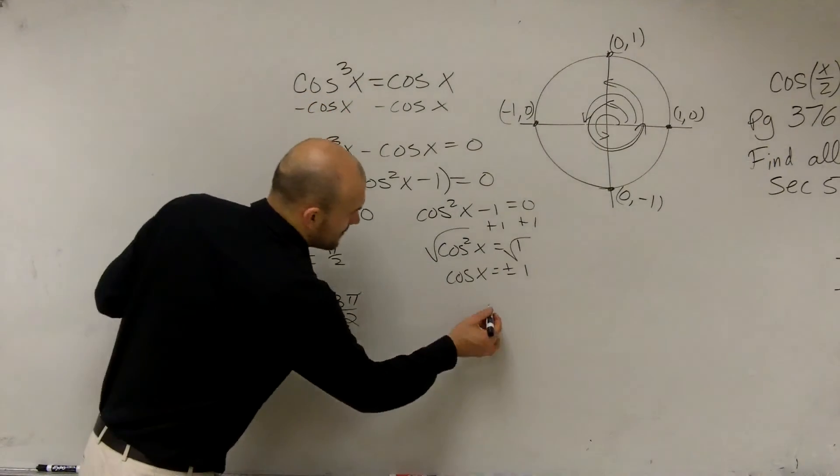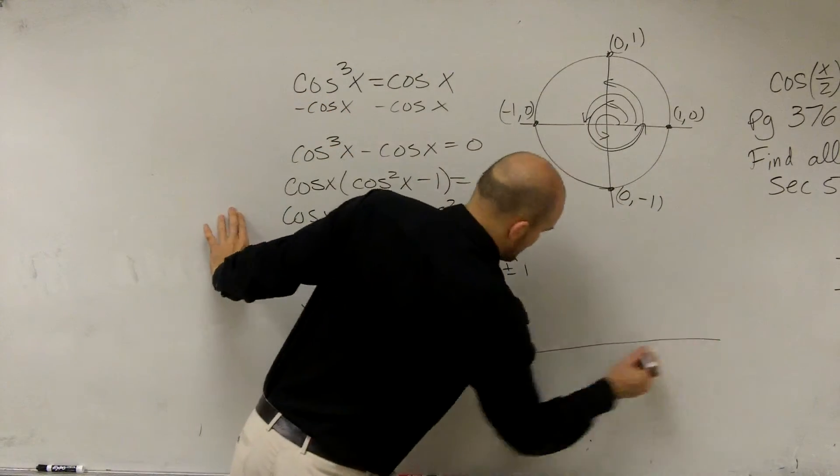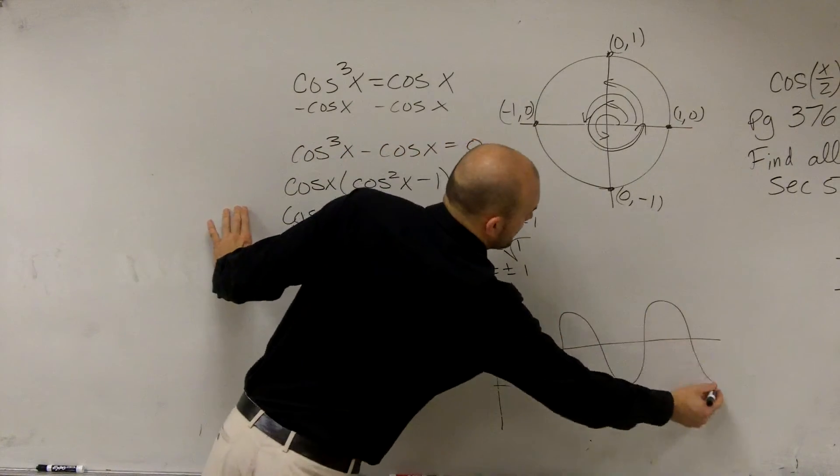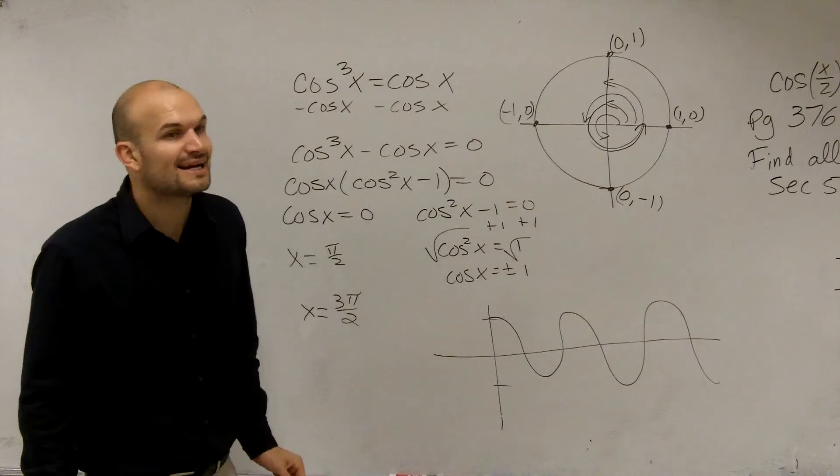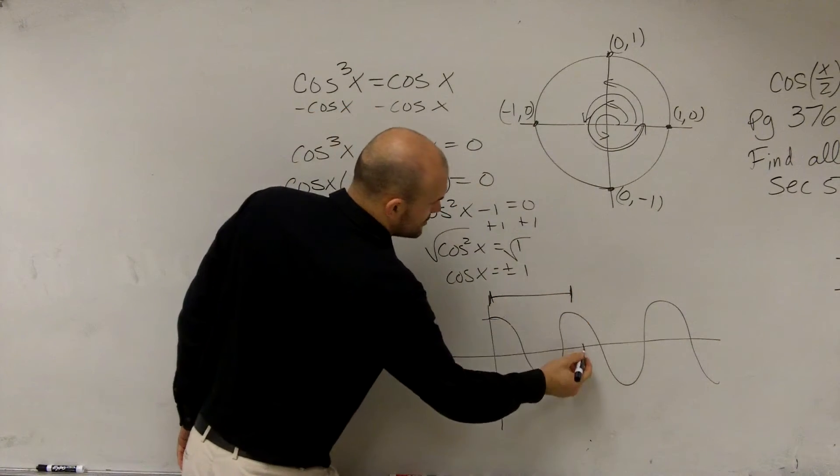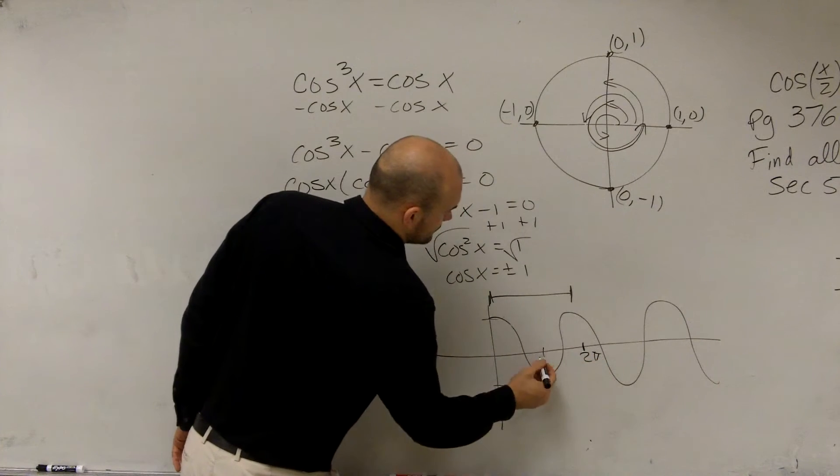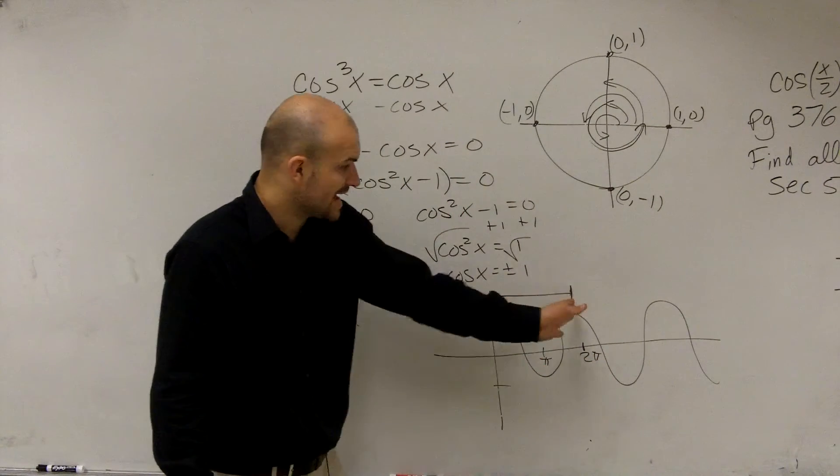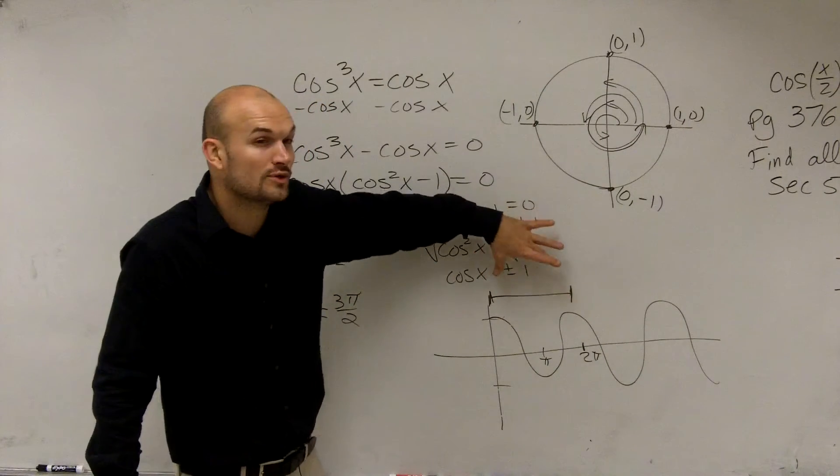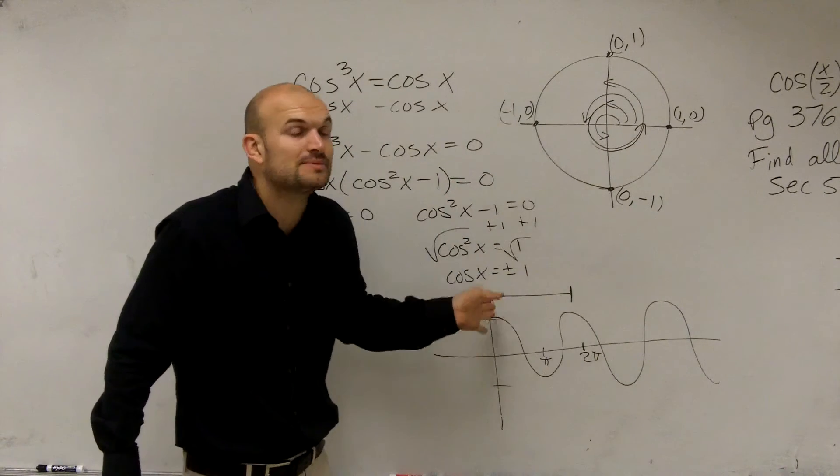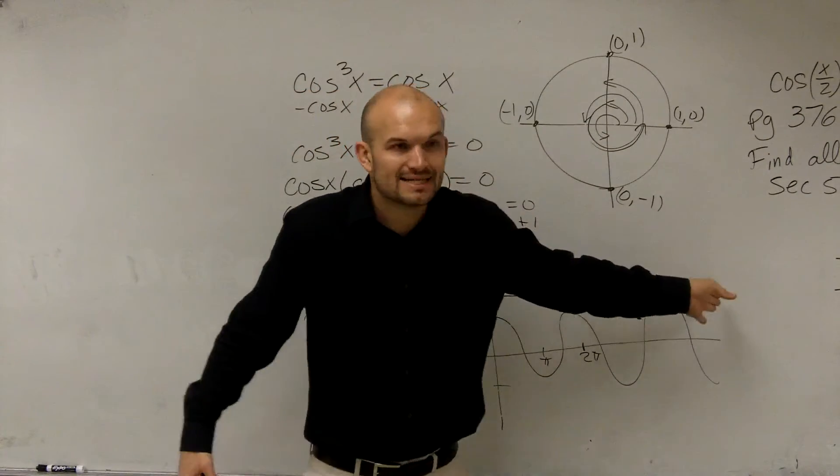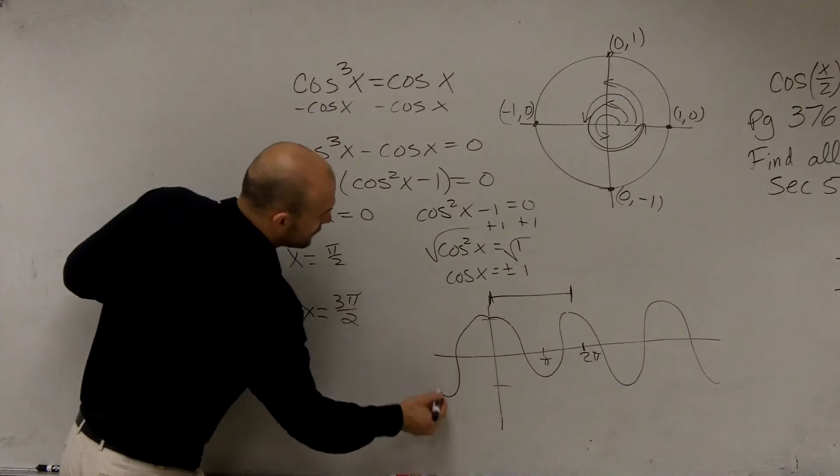This is what we looked into last class period. We looked at the graph of cosine. The graph of cosine looks like this, goes on and on forever. 0 to 2π is right here. That's the unit circle right there. You've learned justifying values between 0 and 2π. Now I'm opening it up to the whole graph, all positive and all negative values.